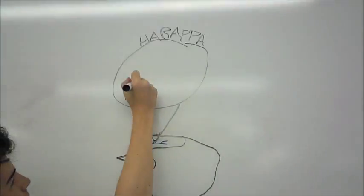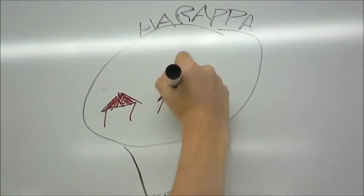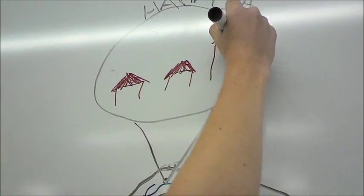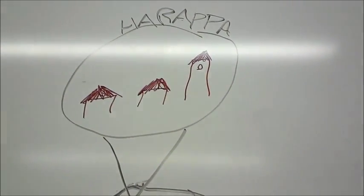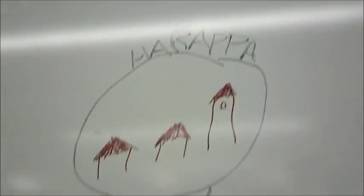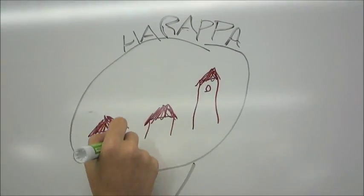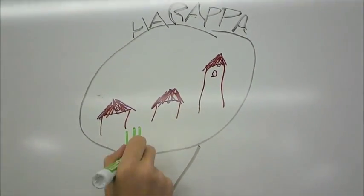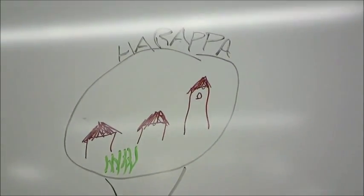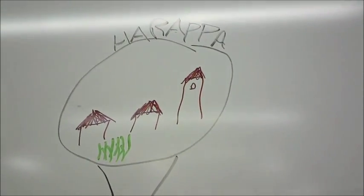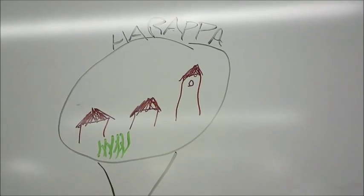This civilization was thriving at many points due to their river. And Akua, she loved her city, Harappa. She loved the granaries, the houses, the farms. She loved where she lived.